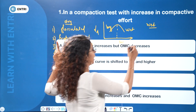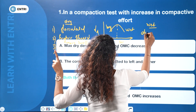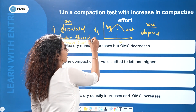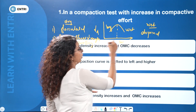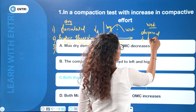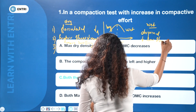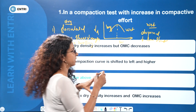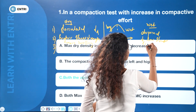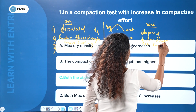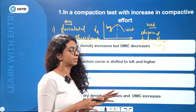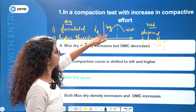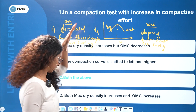On the wet side of optimum, the structure is dispersed. This gives lower shear strength and less swelling. When compactive effort is increased, the compaction curve shifts to the left and higher.